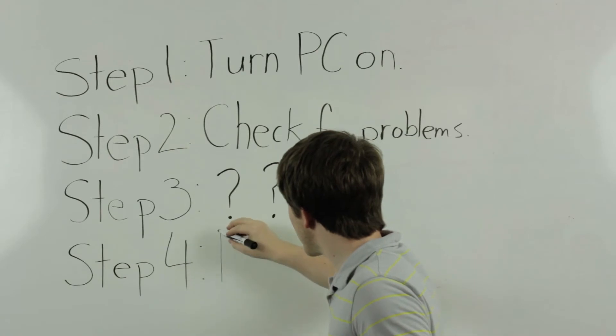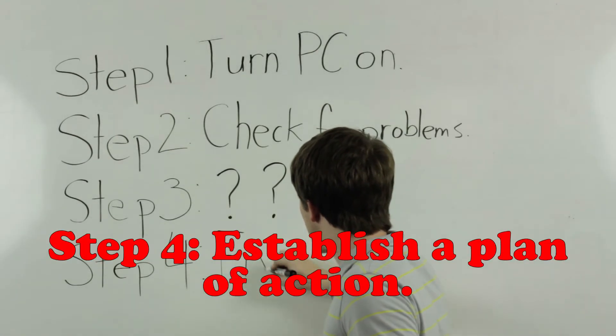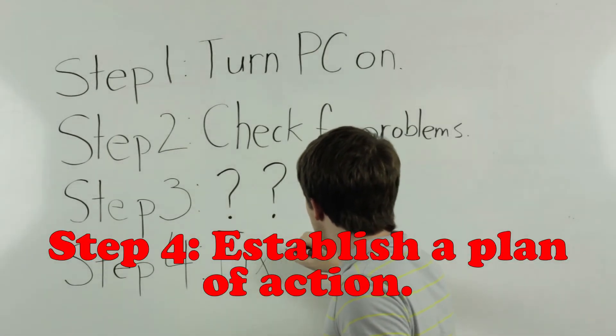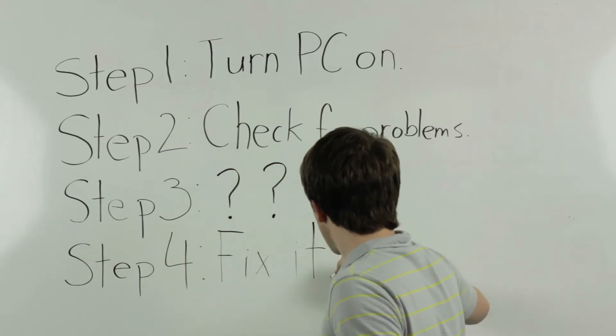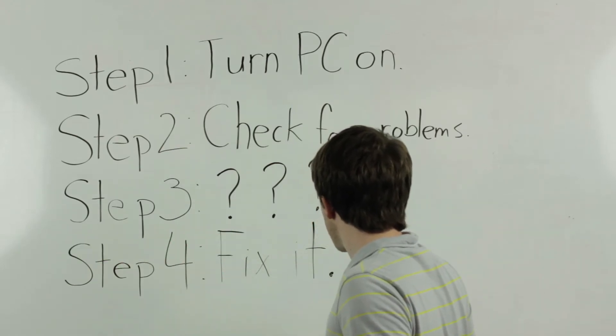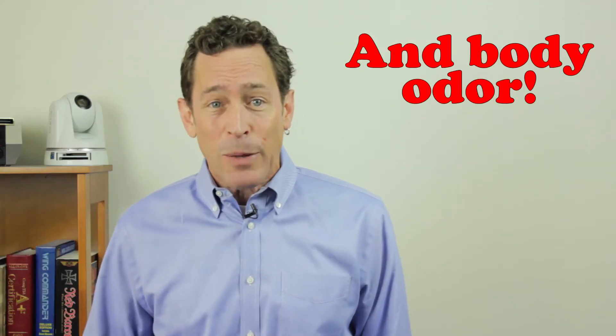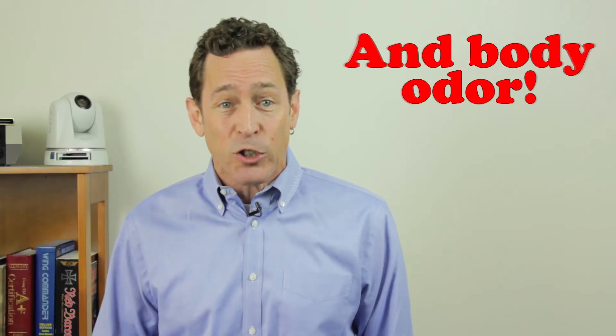Part 4 of our one-of-a-kind process involves establishing a plan of action to resolve the problem. I'm speaking from experience when I say that it's literally impossible to fix a computer without knowing what you're about to do. You'll learn to eliminate uncertainty by actually planning out the steps you'll take to fix your problem, instead of randomly flailing away at the keyboard.